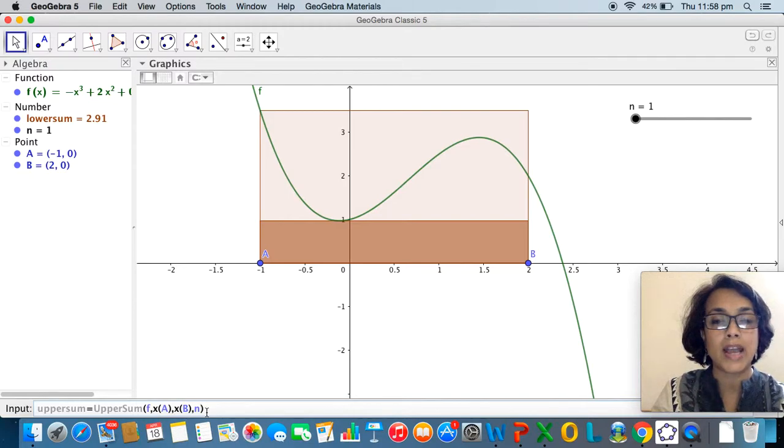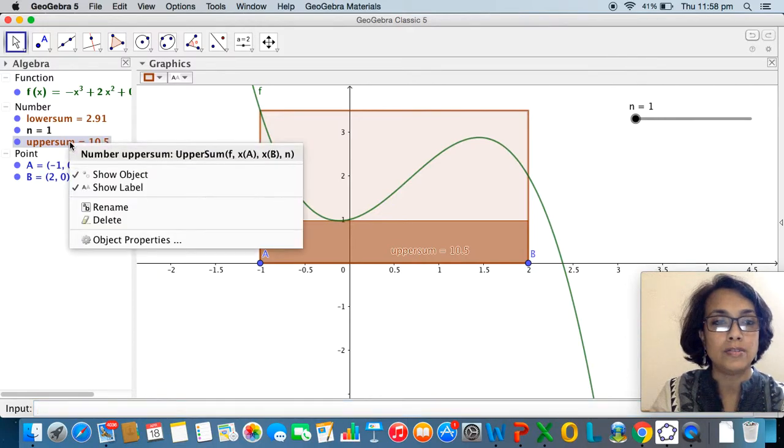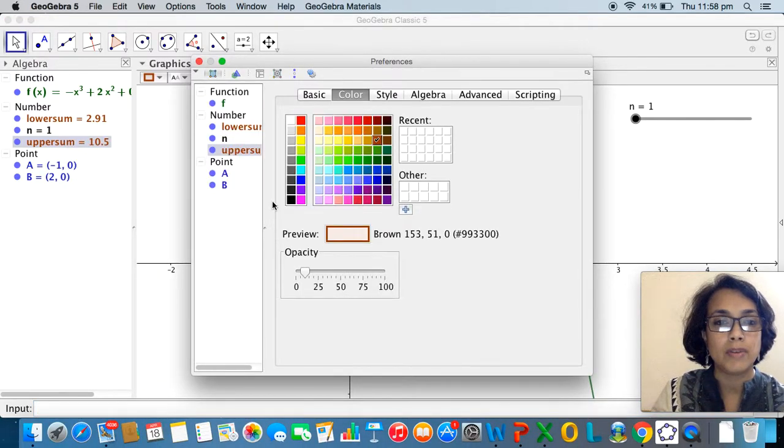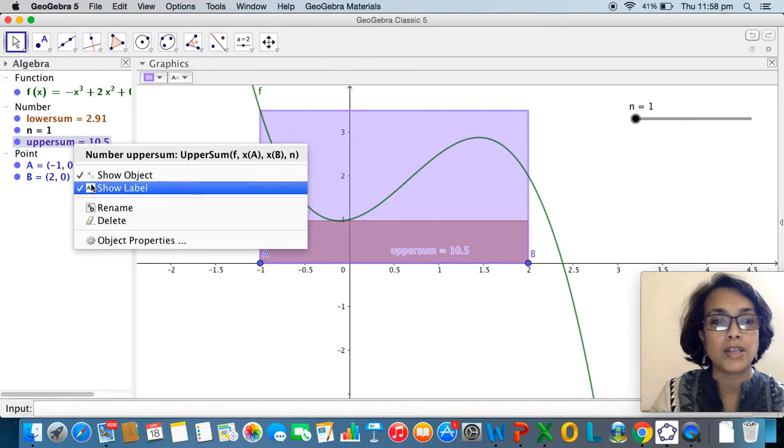Notice that a rectangle has popped up behind but the area of this rectangle is much beyond the area under the curve. If I want I can change the color, maybe I can change it into a light blue shade or a purple shade with a slightly increased opacity. I do want to get to see both the upper sum and the lower sum. I'm also going to untick the show label option.